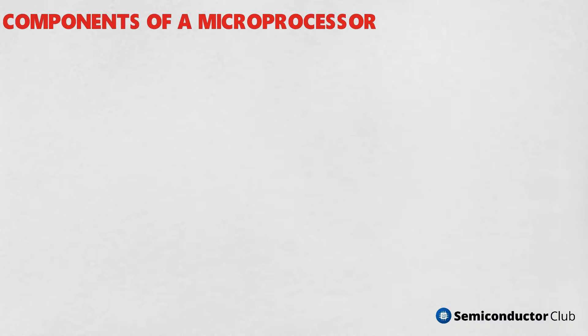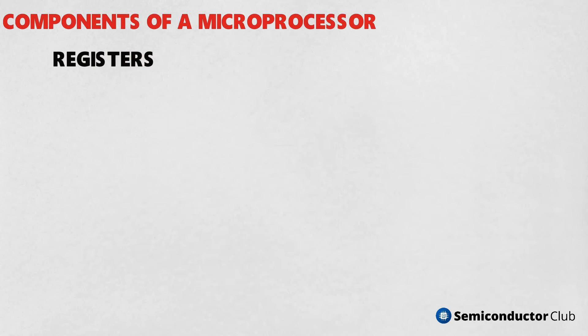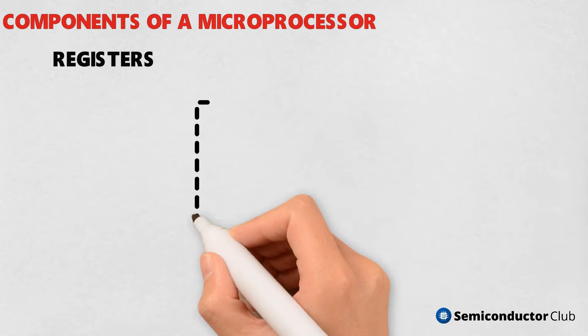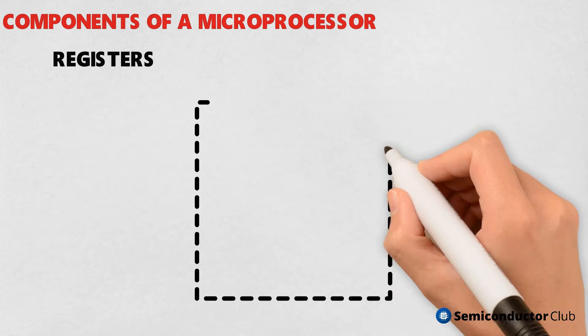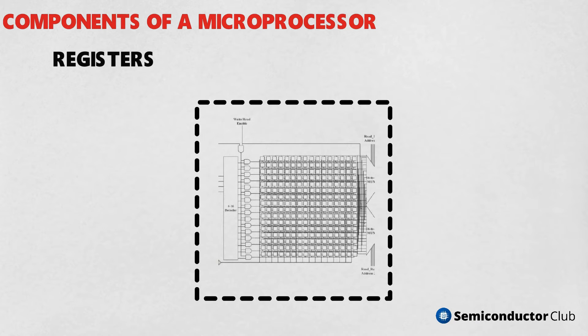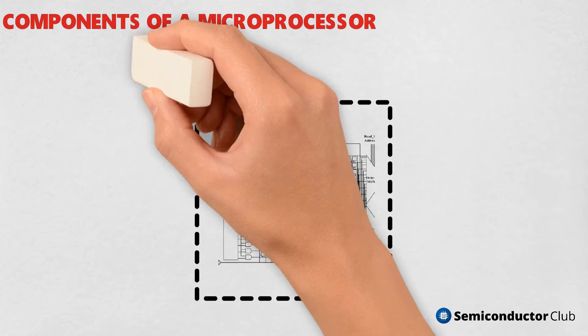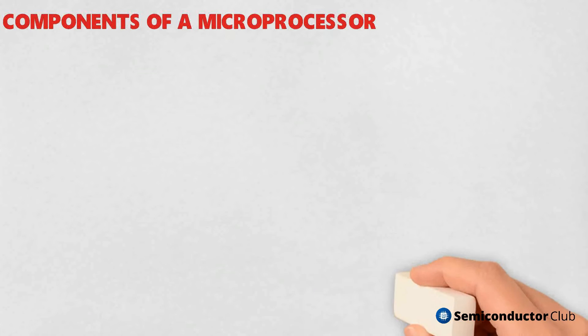Registers are temporary storage locations inside the CPU that hold data and addresses. The register file is the component that contains all the general-purpose registers of the microprocessor.